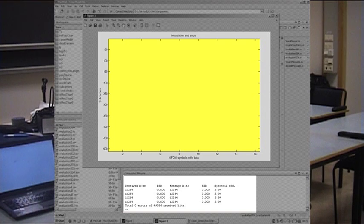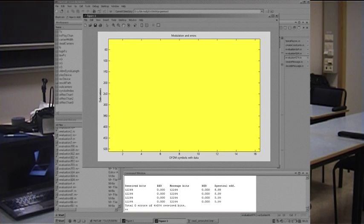And below here we see the results. We've transmitted about 49,000 bits and none went wrong. You see these four blocks of data that have been sent, and they all have a spectral efficiency of about six.